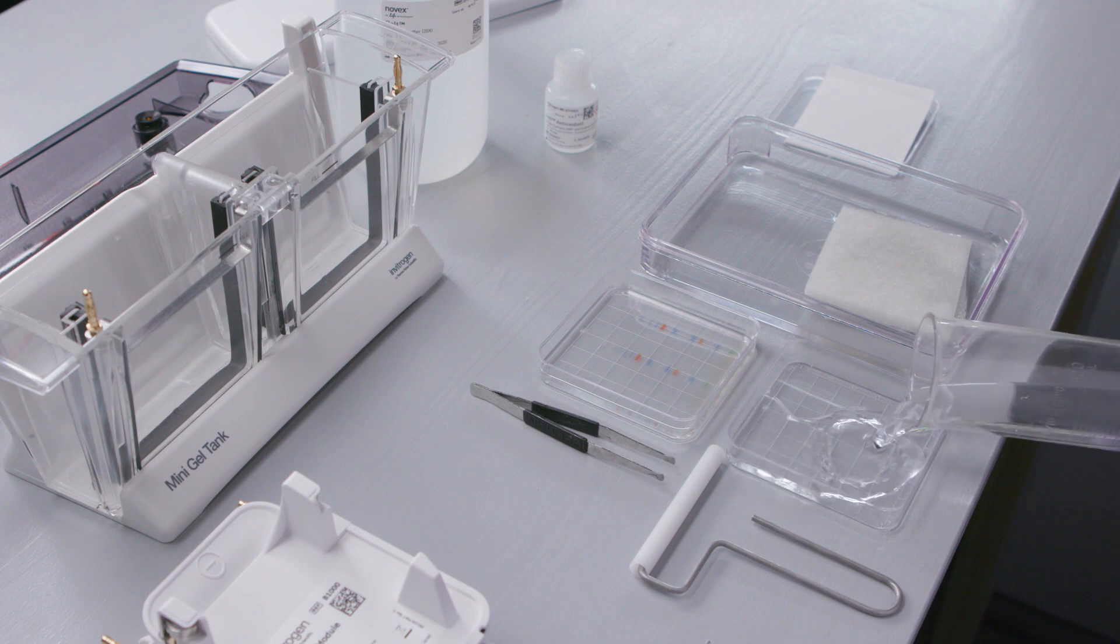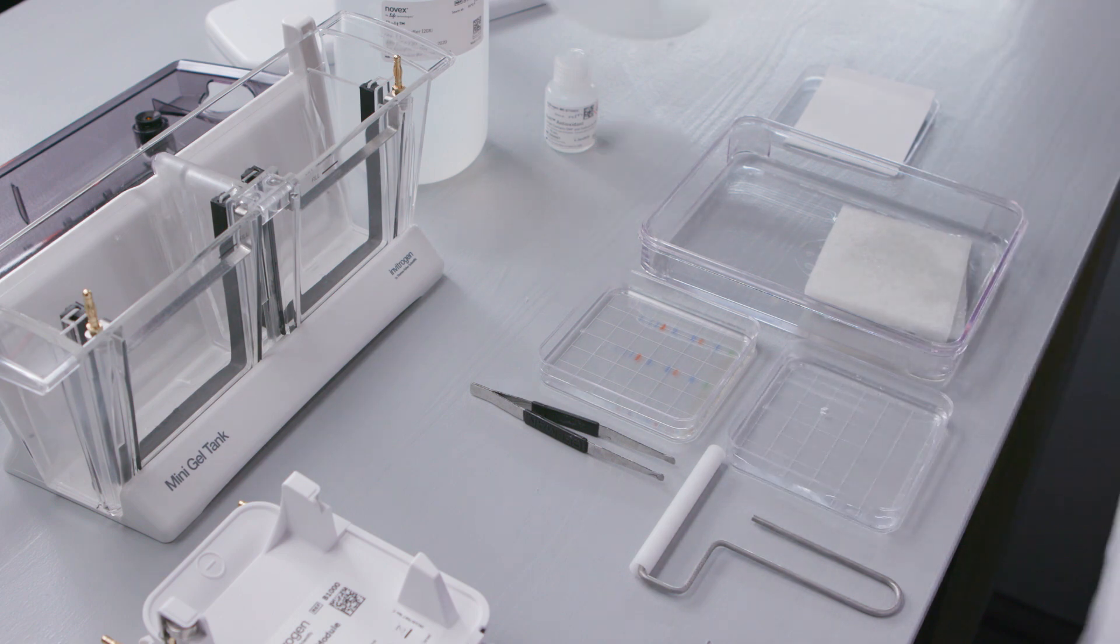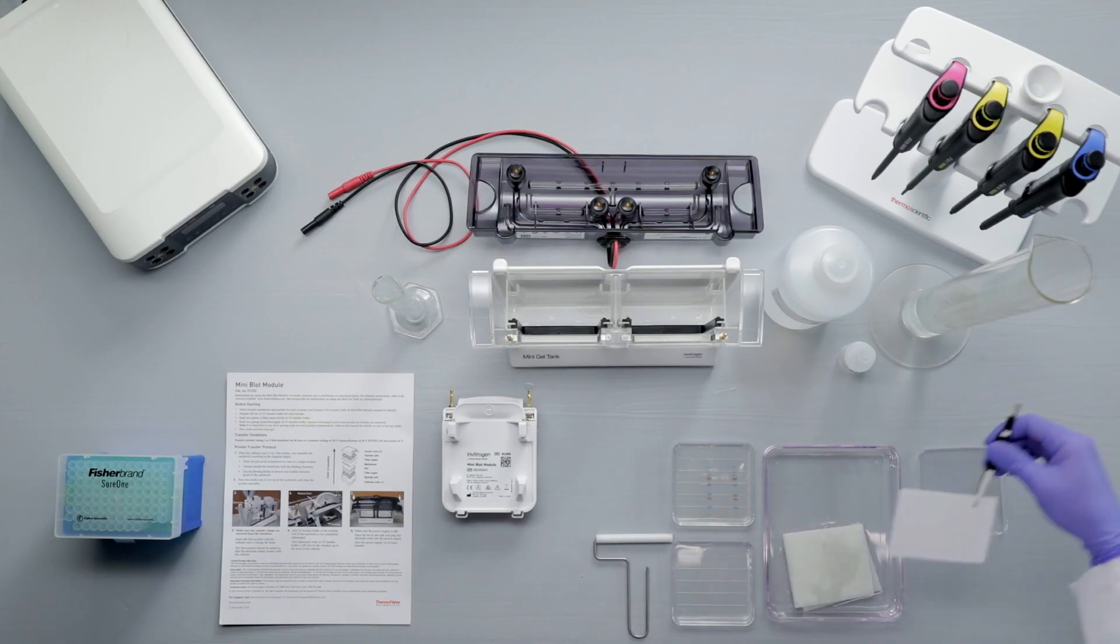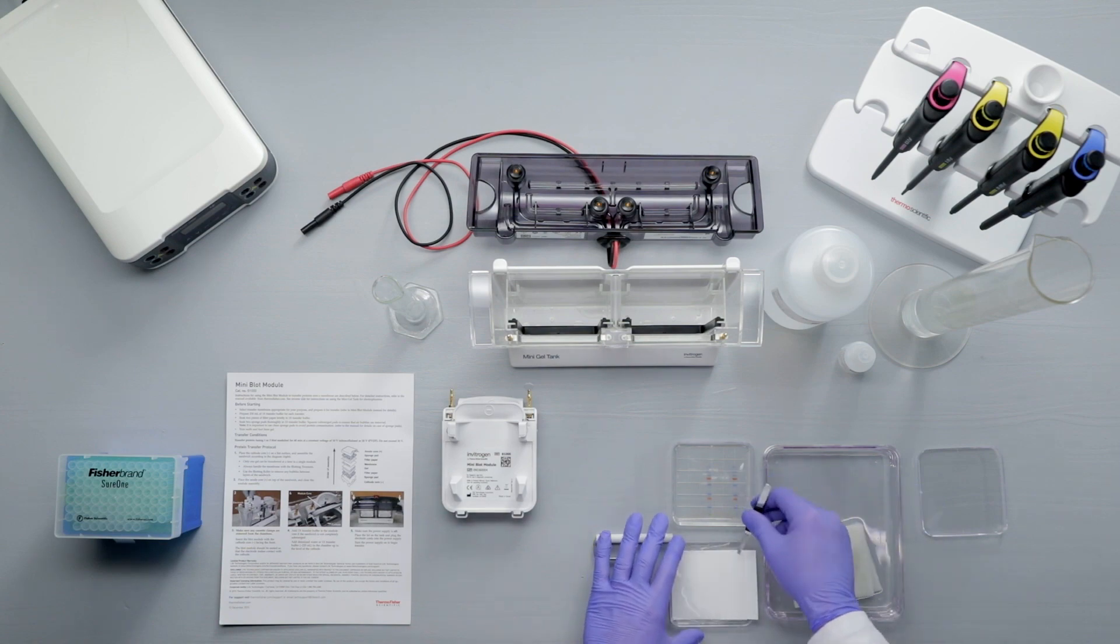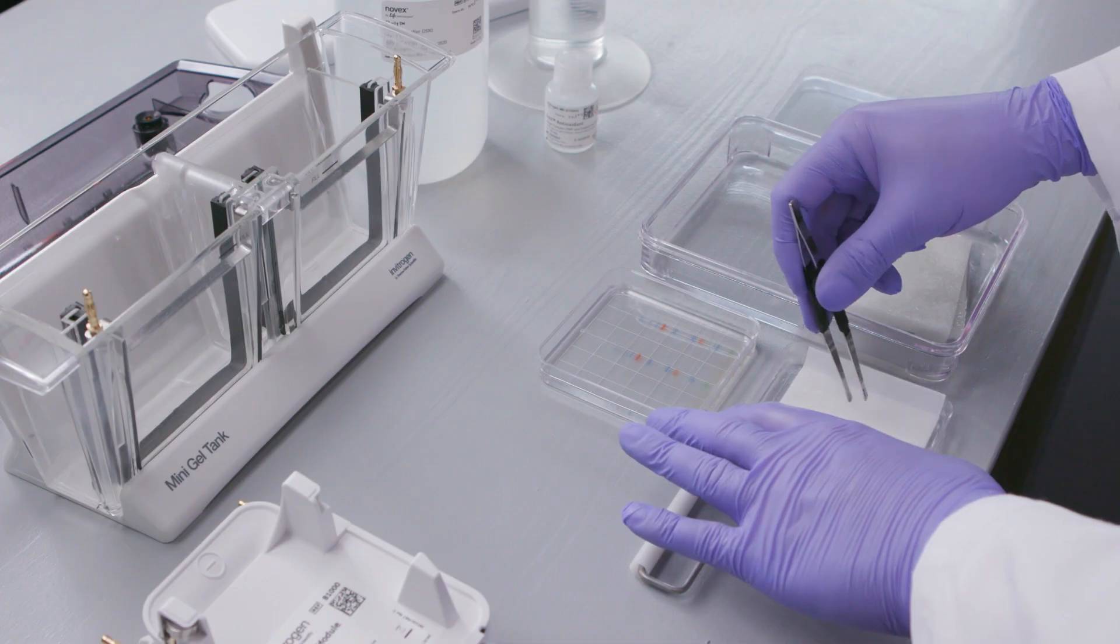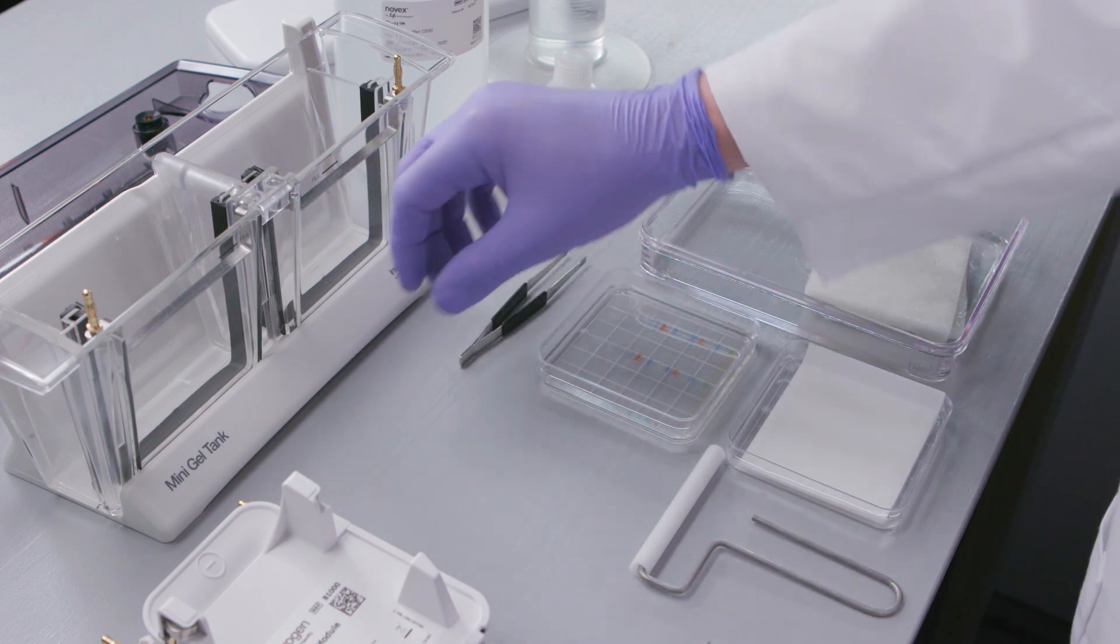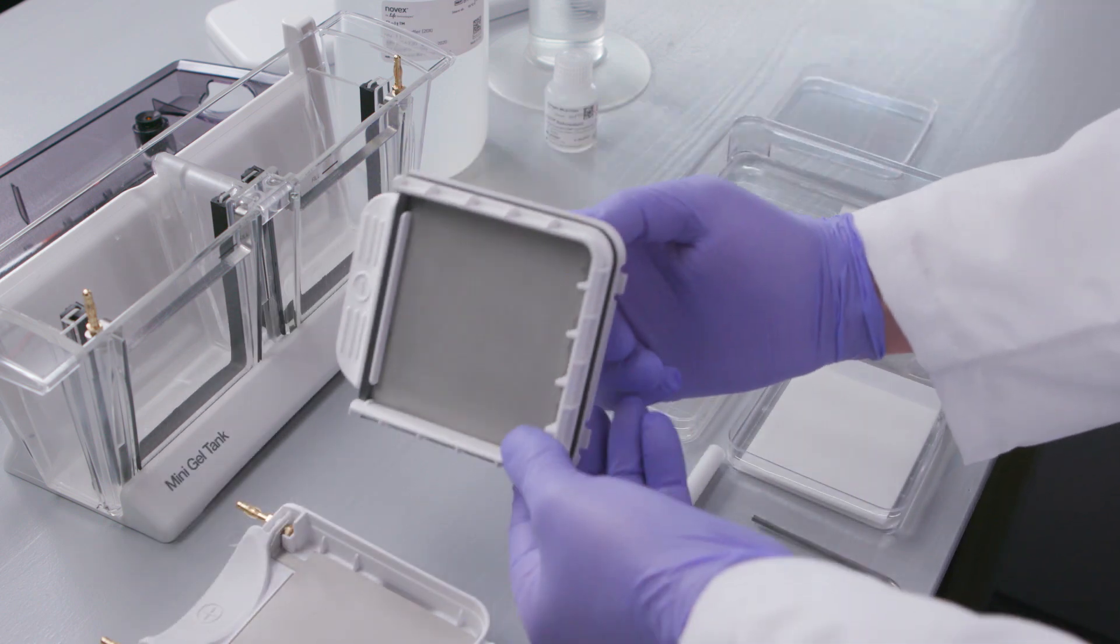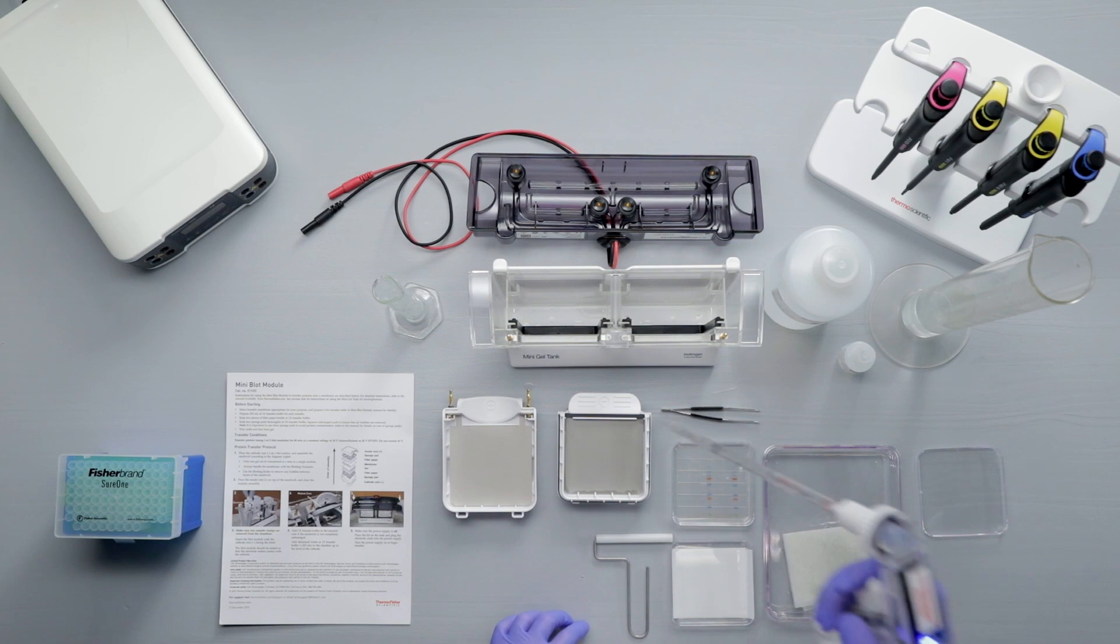Place a shallow dish on the bench and pour 1X transfer buffer to dip the filter papers into during sandwich assembly. Assemble the western transfer sandwich by placing the cathode or negative core on a flat surface. Pour five milliliters of transfer buffer into the core.